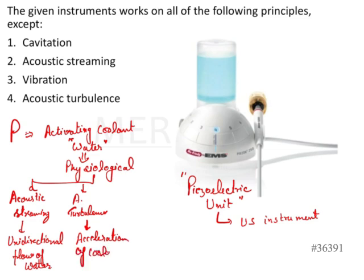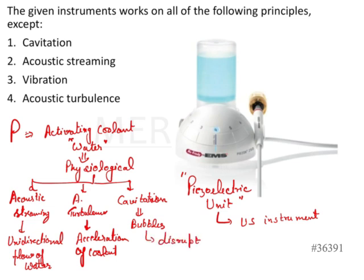Soon, this turbulence starts creating certain bubbles. Whenever turbulence is present, that is no longer a linear flow, and that is why bubbles start forming in the water. These bubbles go to the biofilm and disrupt it. The third effect is cavitation — which is the formation of bubbles in the water due to turbulence, and that disrupts the biofilm present on the surface of the roots.